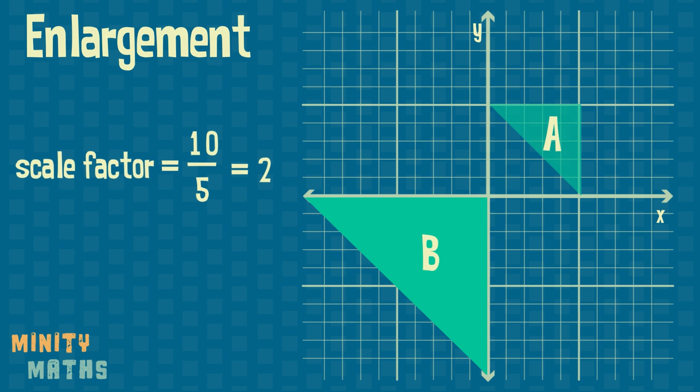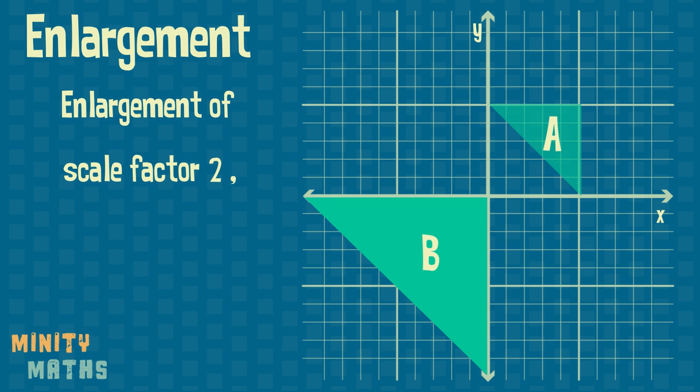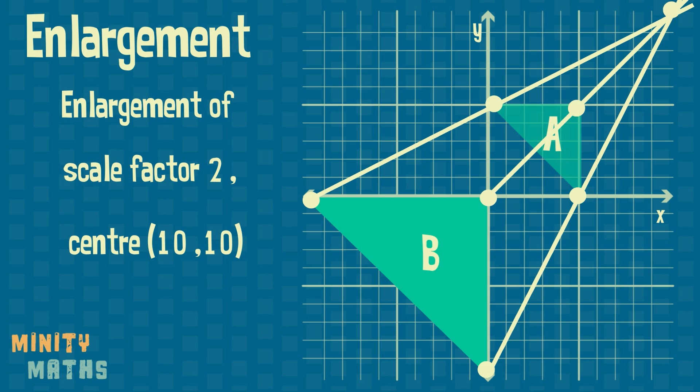To find the center of enlargement, we draw lines from the corresponding vertices of the new shape and old shape, extending them until they cross. The point at which they cross is the center of enlargement.